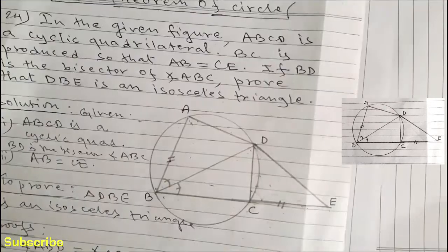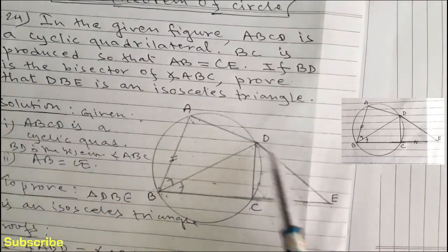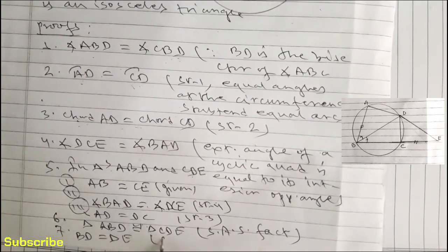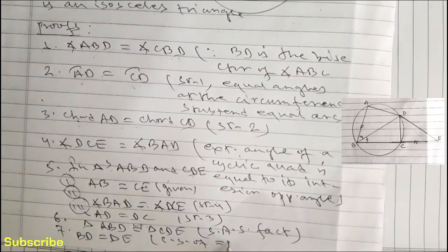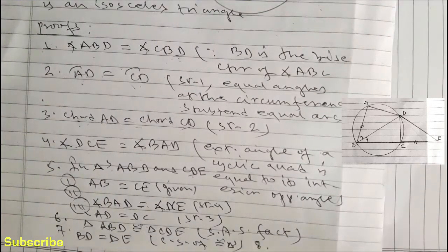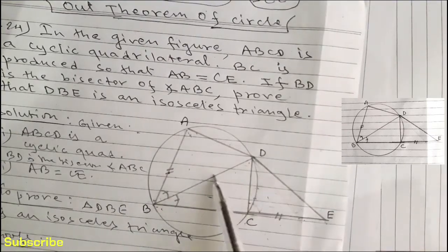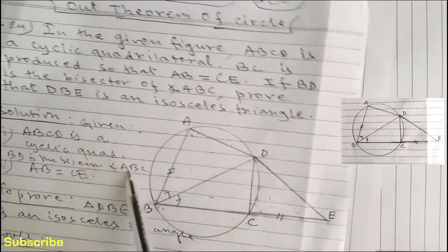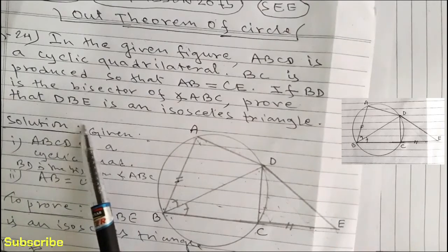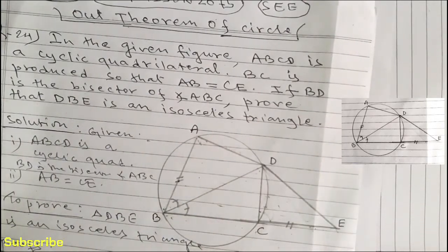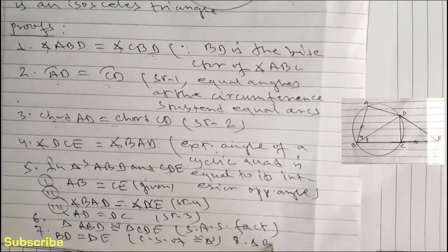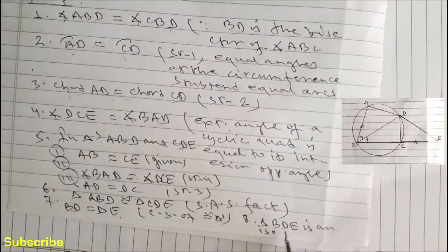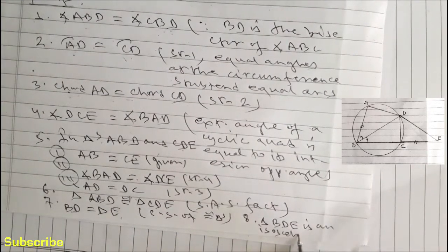In statement number 7, we can write BD is equal to DE as corresponding sides of congruent triangles. In statement number 8, since BD is equal to DE, and two sides of triangle BDE are shown equal, we can write triangle BDE is an isosceles triangle.